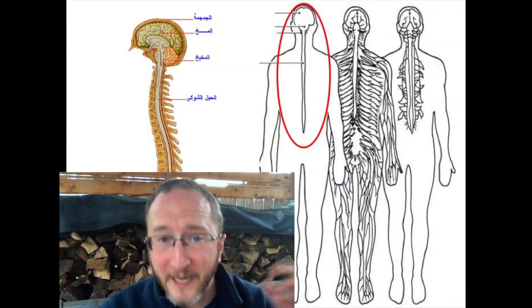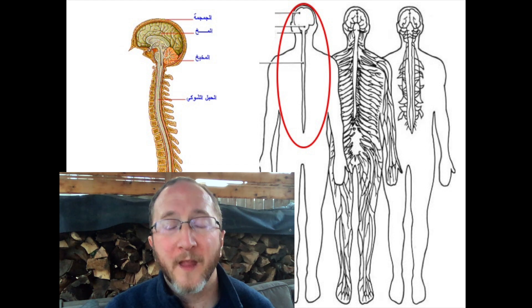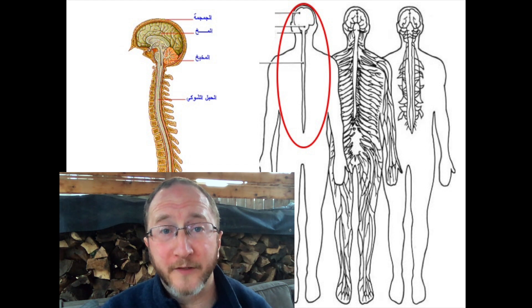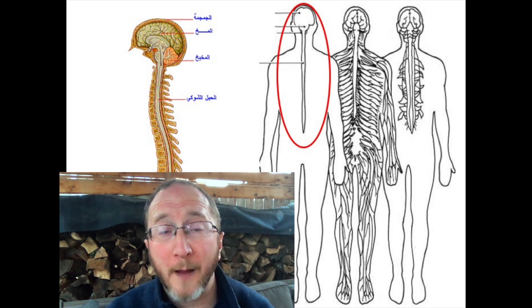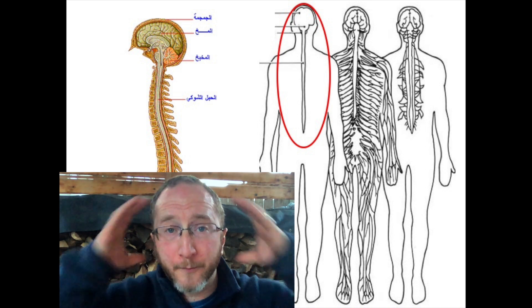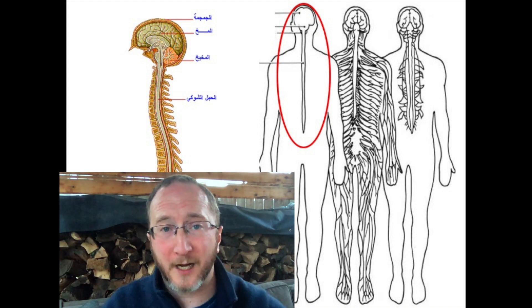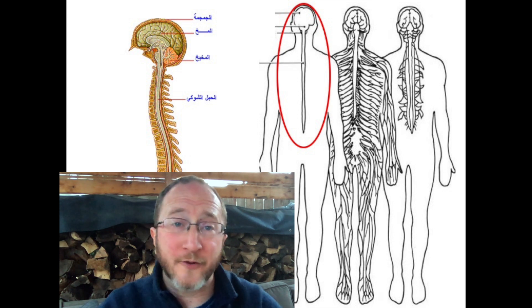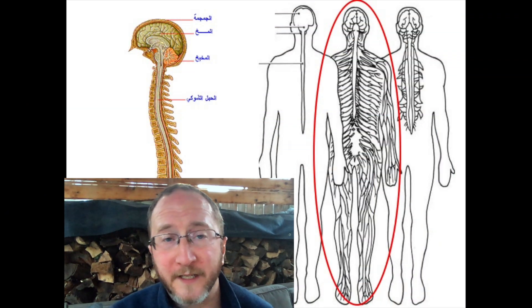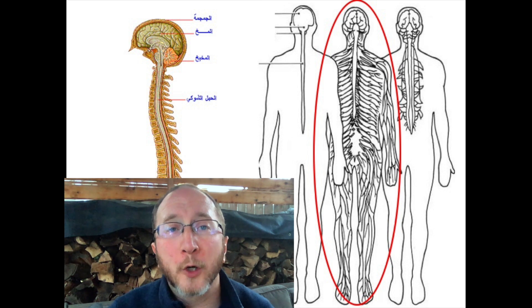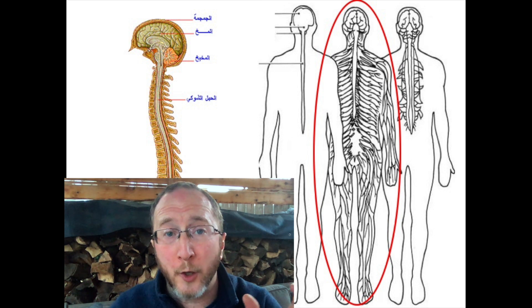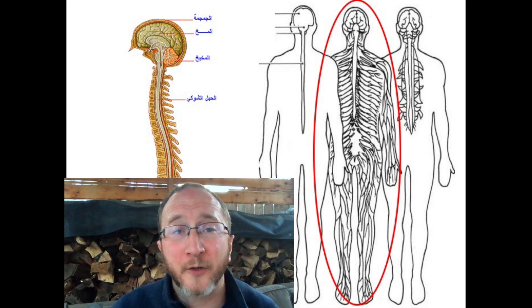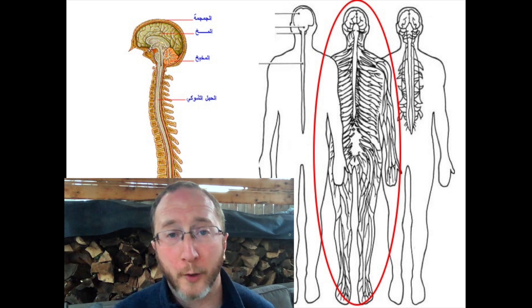The nervous system can be divided into two parts: the central nervous system and the peripheral nervous system. The central nervous system involves the brain — the supercomputer that runs the body — the optic nerves that run your eyeballs, and the spinal cord that connects your brain to the rest of your body and back up. The peripheral nervous system involves everything else: all the nerves that come off the spinal cord, the neuromuscular junction between the nerve and the muscle, and the actual muscle itself.